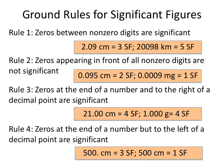The first thing we need to establish is that non-zero numbers are always going to be significant. So if we look at 121, each one of those numbers is a non-zero number and each one of them is significant. So there are three sig figs in this particular value.